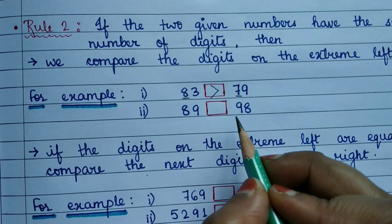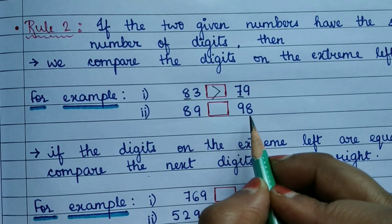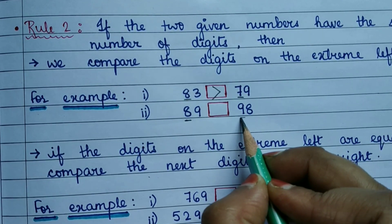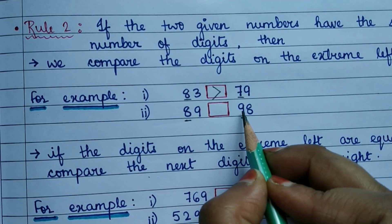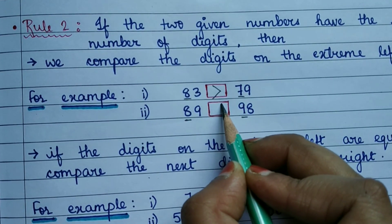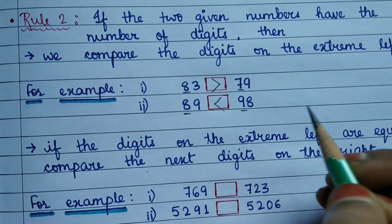Similarly, here both numbers have two digits. So we will compare the digit on the extreme left: 8 and 9. Since 9 is greater, this entire number 98 will be greater than 89.